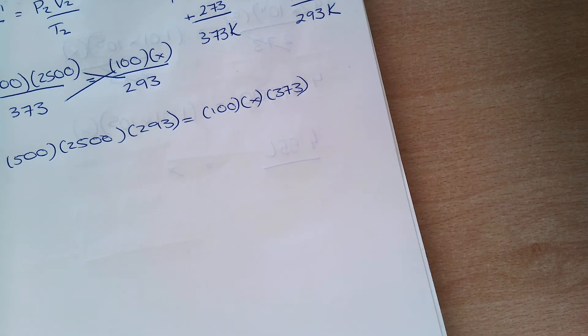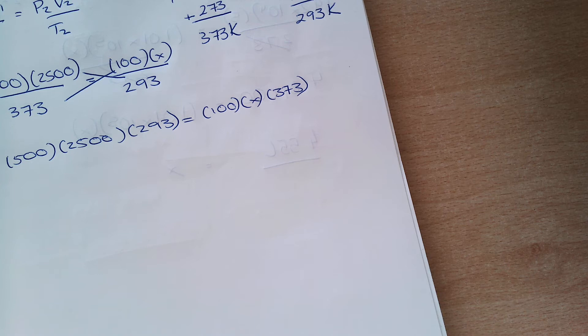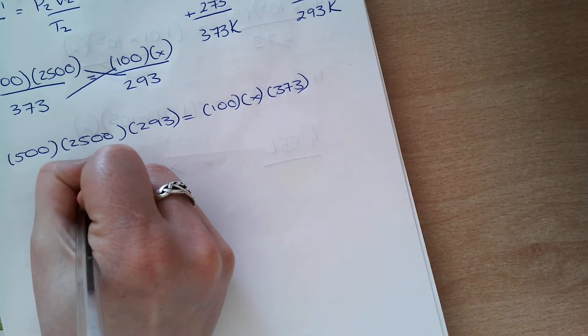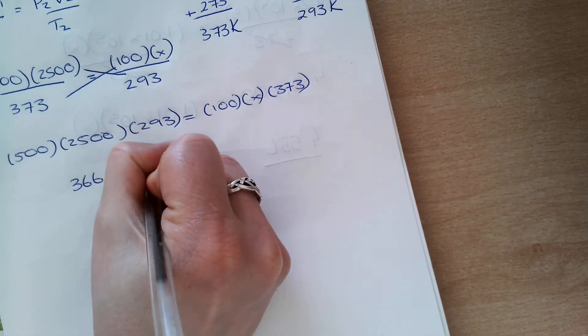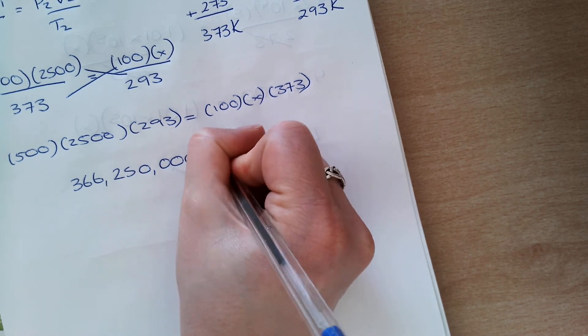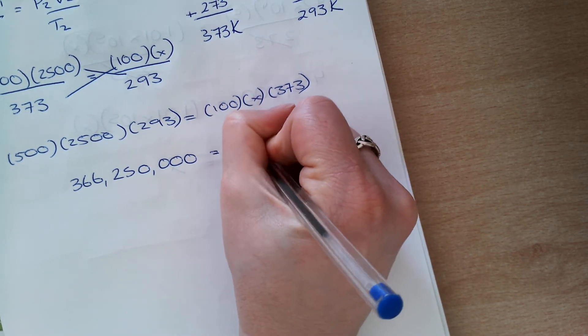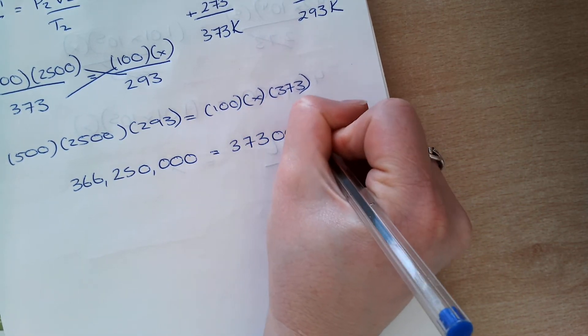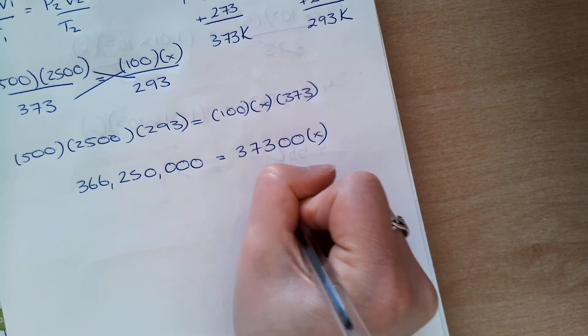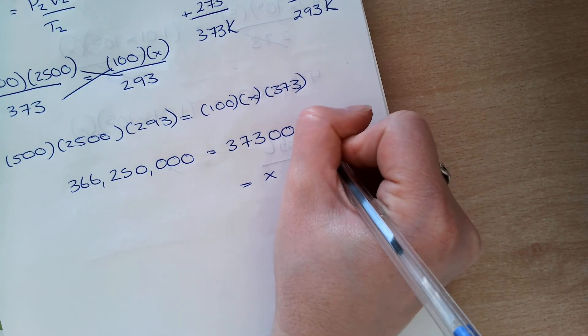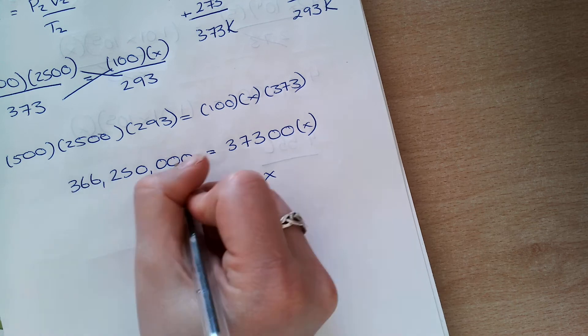So, when I multiply this 500 by 2,500 by 293, that gives 366,250,000 equals 373,000X.